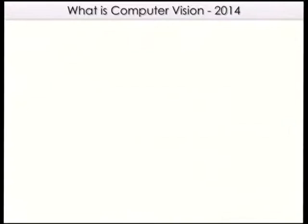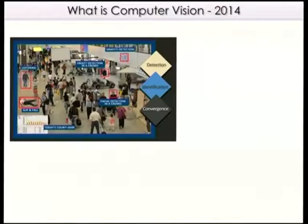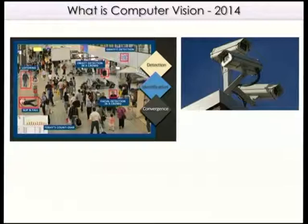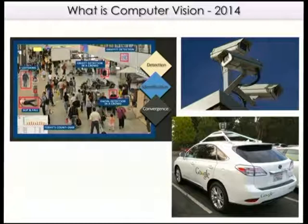Then computer vision comes along now, and I thought I'd better look up what it is. It's a lot more complex. But in the end, all we're talking about is taking an image. What we tend to think of with computer vision now — especially with surveillance — is all about real-time identifying who you are. There are cameras everywhere. London is supposedly the most photographed city in the world. And then you've got people like Google trying to have automated driving. But in the end, all it is is taking an image and processing that image.